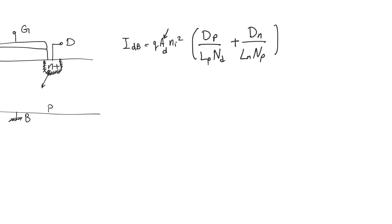Nd is the doping level on the n-side of the p-n junction, which in this case is the drain, and Na is the acceptor doping on the p-type side, which is the substrate. To reduce this form of leakage, we can use high doping in the drain and high doping in the substrate — this helps increase the denominator — and we can also reduce the area of the drain.